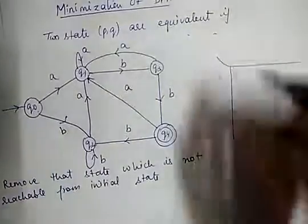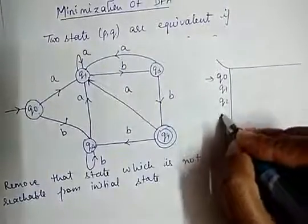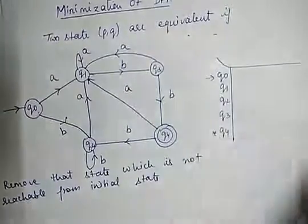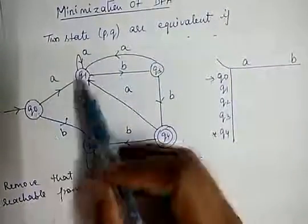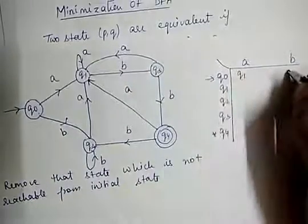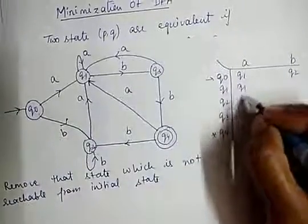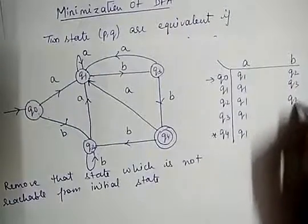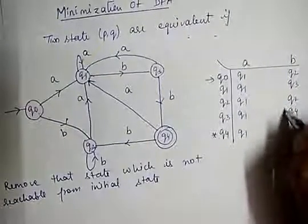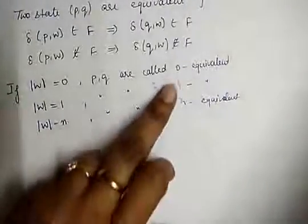Now we create the transition table for this DFA. It will look like this: q0 is the initial state, then q1, q2, q3, and q4 which is the final state. We have two inputs, a and b. From q0 with input a I reach q1, from q0 with input b I reach q2. Similarly for q1, q2, q3, and q4.